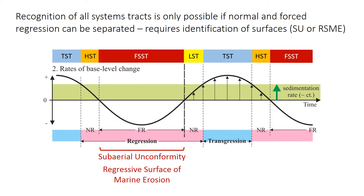The idealized sequence, this cycle, contains four systems tracts: the low stand, transgressive, high stand, and falling stage. However, three of these systems tracts — the low stand, the high stand, and the falling stage — all form as the shoreline is undergoing regression. This makes them very difficult to distinguish unless it's possible to separate things formed in normal regression from things formed in forced regression. And in outcrop, that's really only possible if you have the subaerial unconformity or the regressive surface of marine erosion.